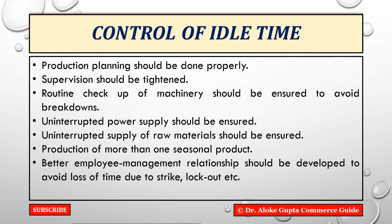Now, the controlling measures of idle time. First, production planning should be done properly — procedures are to be carefully designed well in advance and proper organization is to be made. Second, the task of supervision should be tightened; strict supervision prevents workers from taking excessive breaks and reduces idle time. Third, if production planning is done properly, workers do not have to wait for instructions or supply from other departments. Also, routine check-up of machinery should be done to avoid breakdown and reduce idle time.